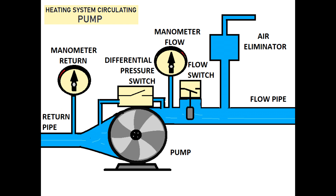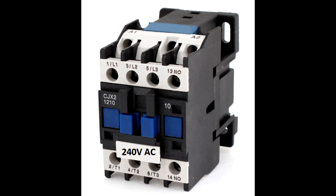Please stop the video and have a look, because every single label will help you understand what I am talking about. Some commercial boilers have a differential pressure switch and flow switch, and believe me, some do not — and I will explain to you why. This is a contactor, and the contactor is used to run the pumps in a commercial installation.